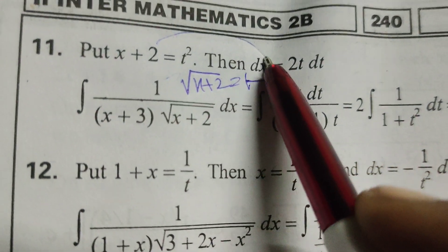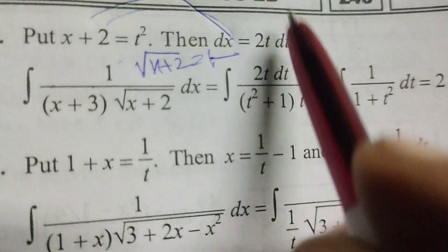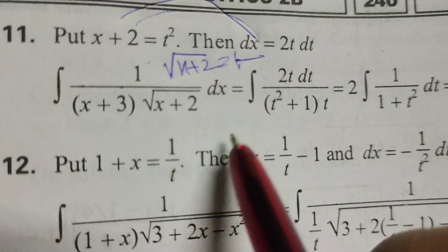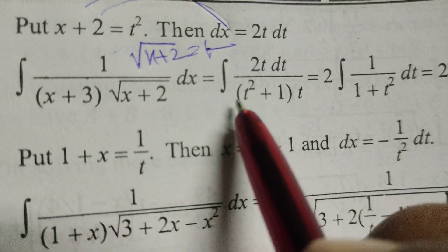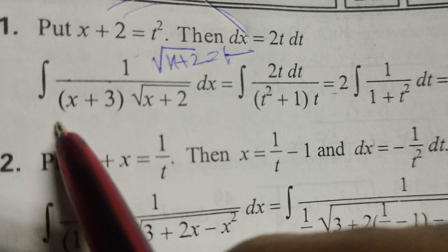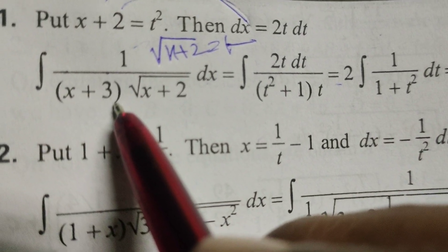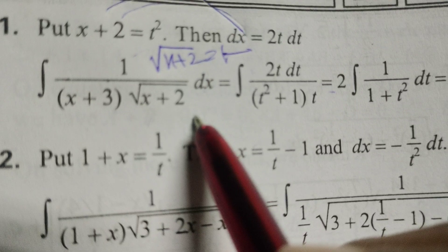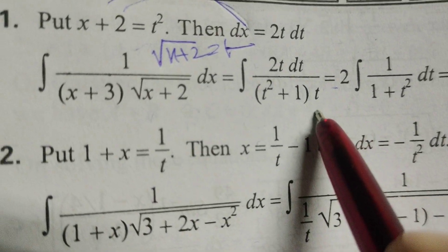Differentiate this: dx equals to 2t dt. Then now in the given integral problem, here substitute in place of dx to t dt by here x plus 3 into root of x plus 2. Root of x plus 2 means t.